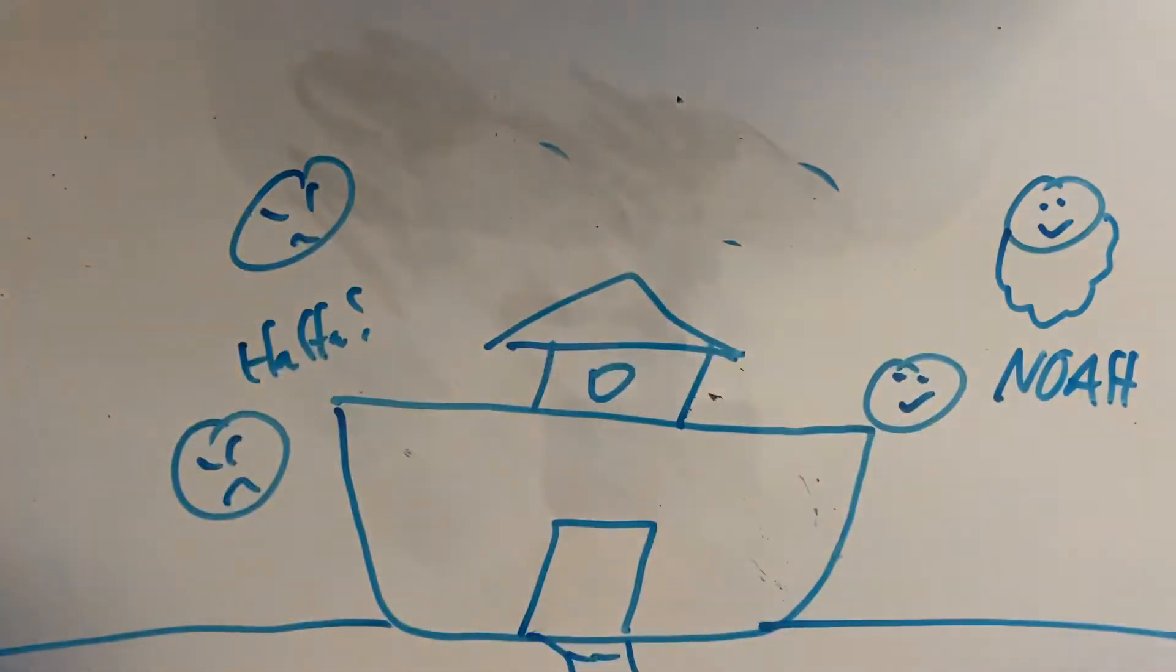And all the time, Noah's friends over here, the bad eyebrow friends, they were laughing at him and saying, ha, ha, ha, why you build such a big boat? That's so silly, Noah. Why you do this? And Noah said, because God told me to. And his friends said, ha, ha, ha, I don't know. This is silly. And so Noah built the boat with all his family.